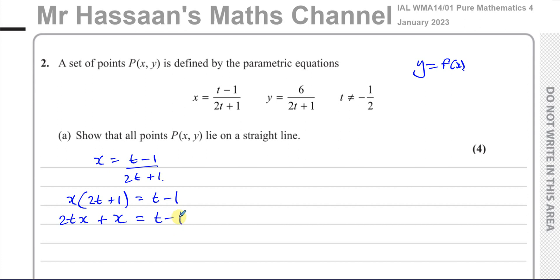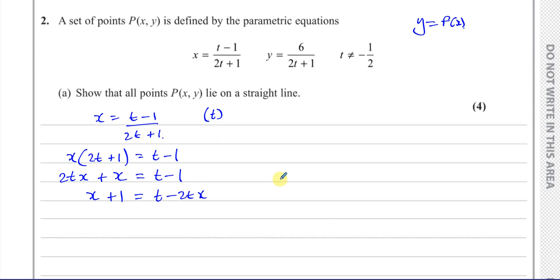So we have x(2t+1) = t-1. Some people will write 2tX + X = t-1, but sometimes they forget to multiply the 1 by the X. Now I want to make T the subject, so I need the T's on the same side. I'm going to keep this side for the T's, so I'll subtract 2tX from both sides, giving -t + x+1 = -2tX. Let me rearrange: -t - 2tX = -x - 1, or better, keep it as x+1 = 6-2x.